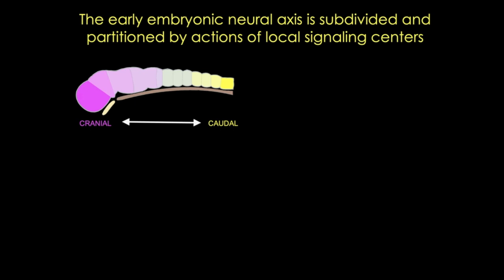Here we have a simple cartoon of the neural tube. I've colored the cranial end hot pink and the caudal end bright yellow. These colors represent morphogens, and you can see a gradient of pink that decreases as we move caudally. Morphogens are signaling molecules that emanate from a restricted region of a tissue and spread away from the source, forming a concentration gradient that prefigures the pattern of development. The fate of cells depends upon the concentration of morphogen signals they receive, giving them coordinates similar to latitude and longitude on a map.